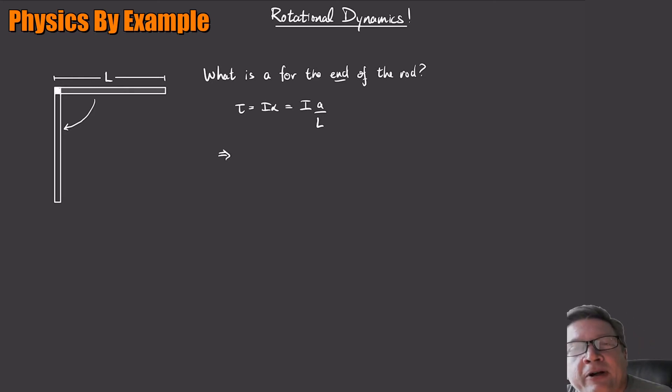What's providing the torque? What's providing the torque is gravity. And gravity is acting at the midpoint of the rod, the center of mass of the rod, right? And the force is just going to be M times G. So the torque is just going to be MG, that's the force, and it's acting at L over 2.